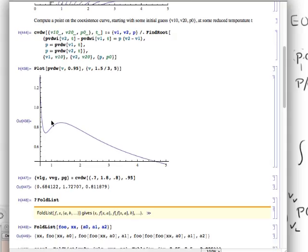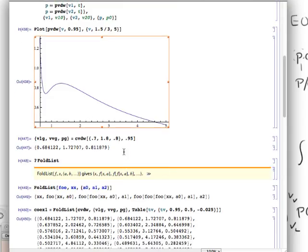So really the ingredients of this were two things. They were a function which takes an initial guess and a temperature value and produces a new value, and then the use of fold list to step along using that function from a known good starting point along a table of temperature values.